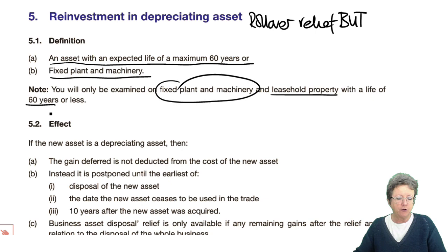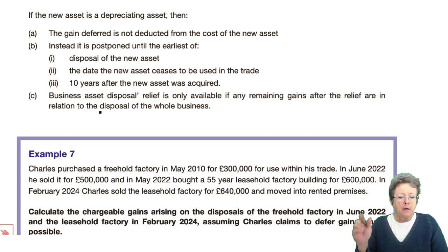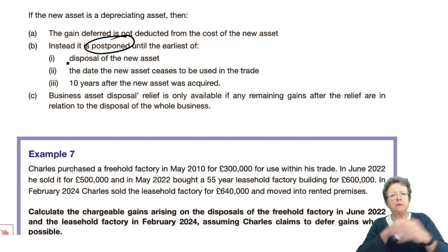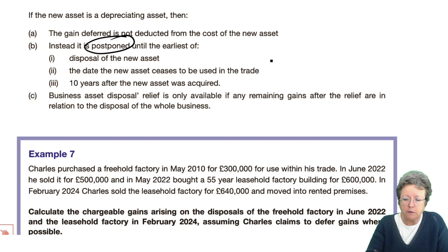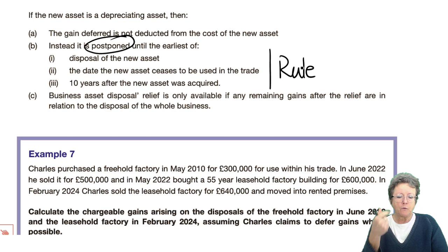With the effect of this, the gain is deferred but not deducted from the cost of the new asset. Instead it's postponed — slightly different process but the idea is the same — until the earliest of these three things: either it's disposed of, or the new asset ceases to be used in the trade, or 10 years, whichever is the earliest.